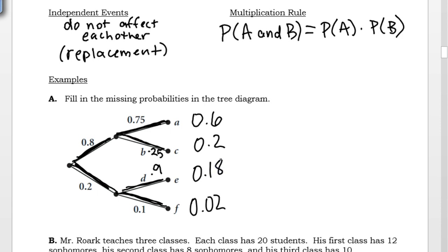If these answers are all correct, I can sum my totals at the end of my tree diagram. They should always add up to one whole. 0.6 plus 0.2 plus 0.18 plus 0.02 adds up to 1. That's a 100% chance of anything happening.